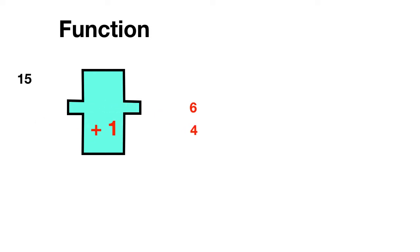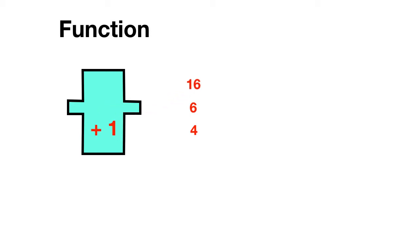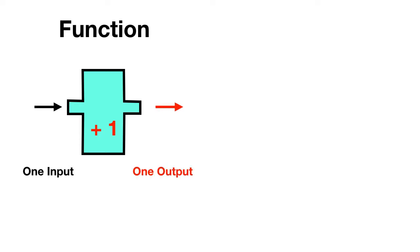And if you put in 15, you know that you'll add 1 and get out 16. So in a function, for each one input, you get out exactly one output. 5 will always go in and come out as 6. It'll never turn into anything else.